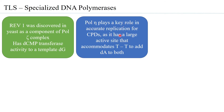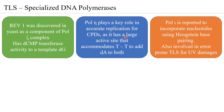Pol eta plays a key role in accurate replication for CPDs — cyclobutane pyrimidine dimers. Because it has a large active site, it accommodates both pyrimidines in dimer form and adds A to both T's. Pol eta actually adds the correct nucleotide, carrying out accurate replication. However, if pol eta carries out replication on undamaged DNA it is found to make errors — an interesting facet where accuracy at a thymidin dimer contrasts with error-proneness on normal DNA.